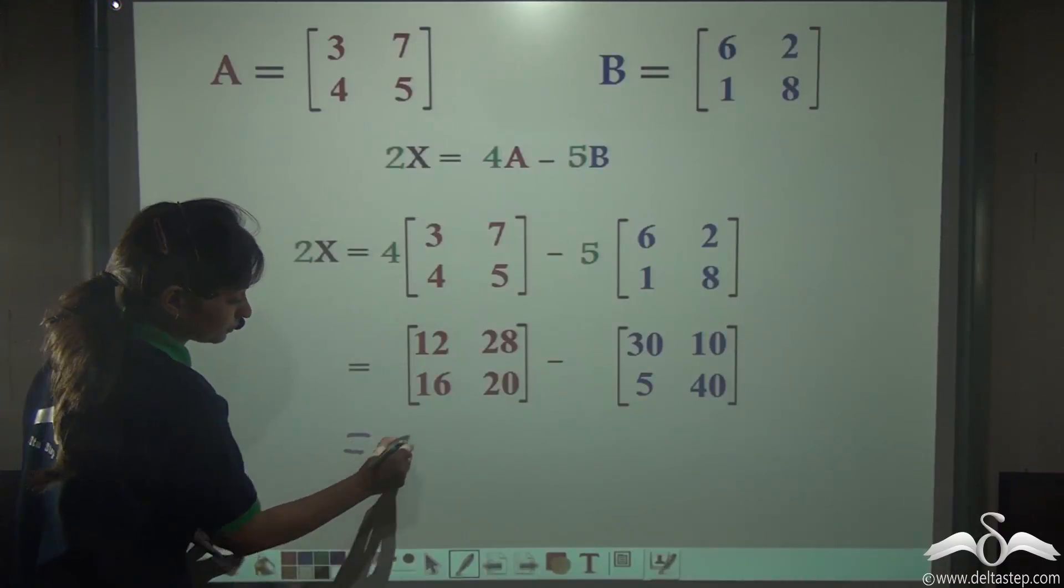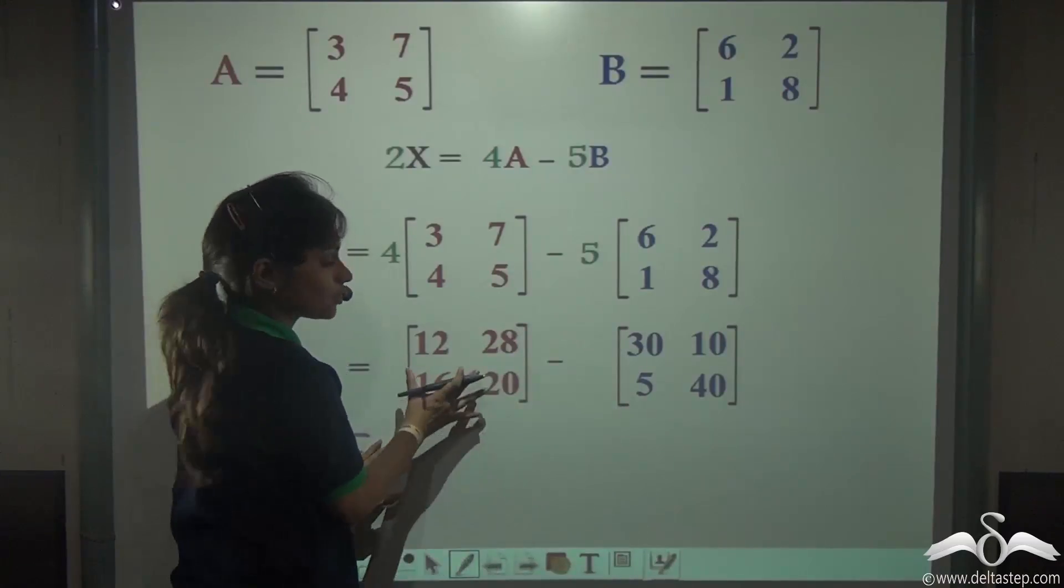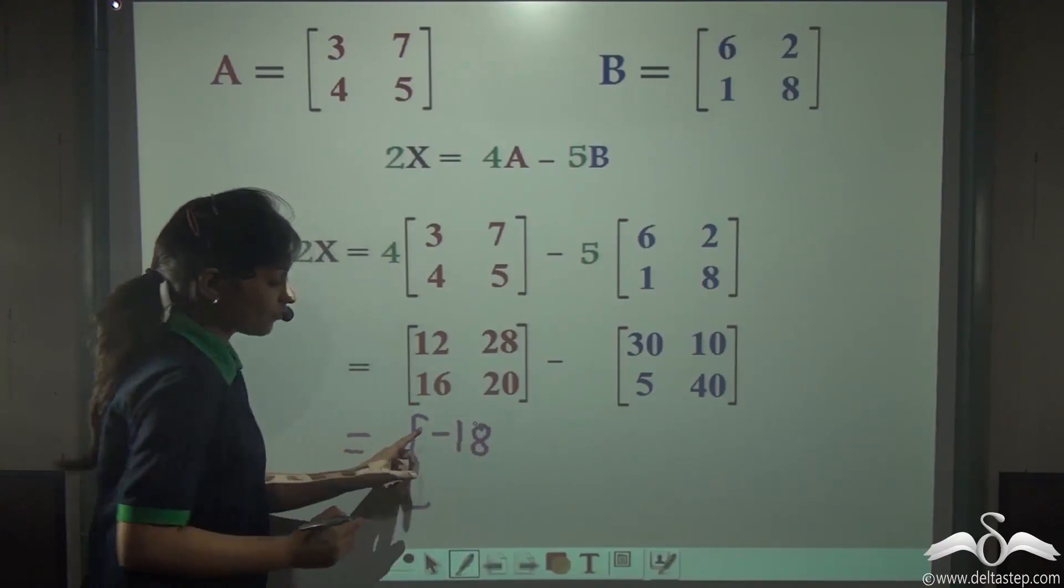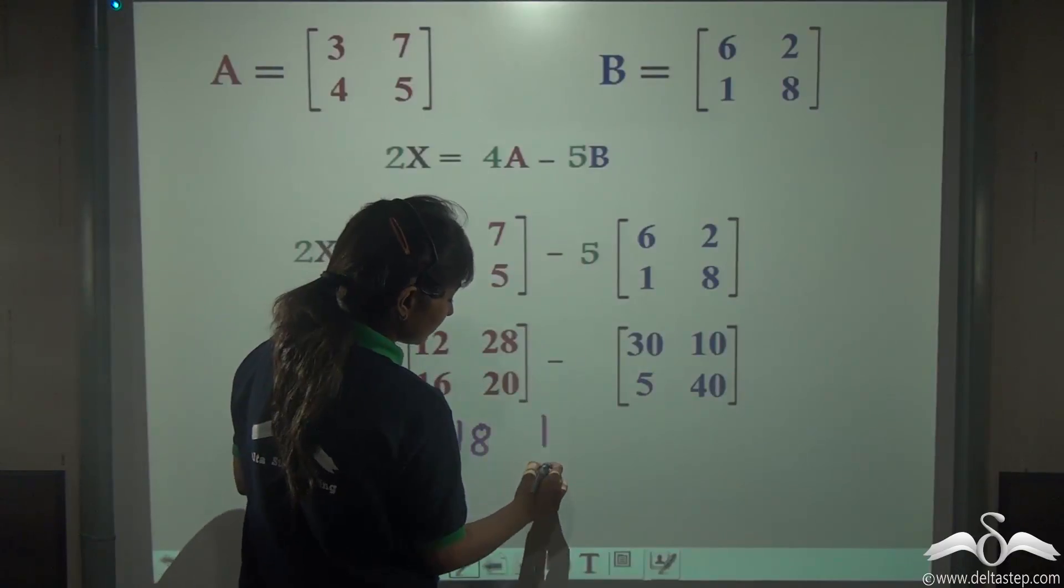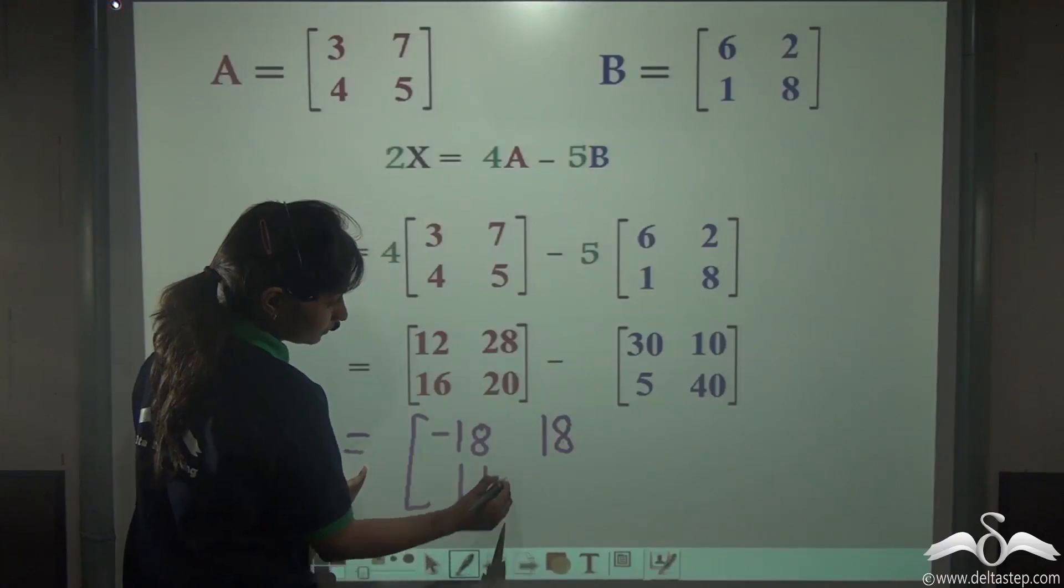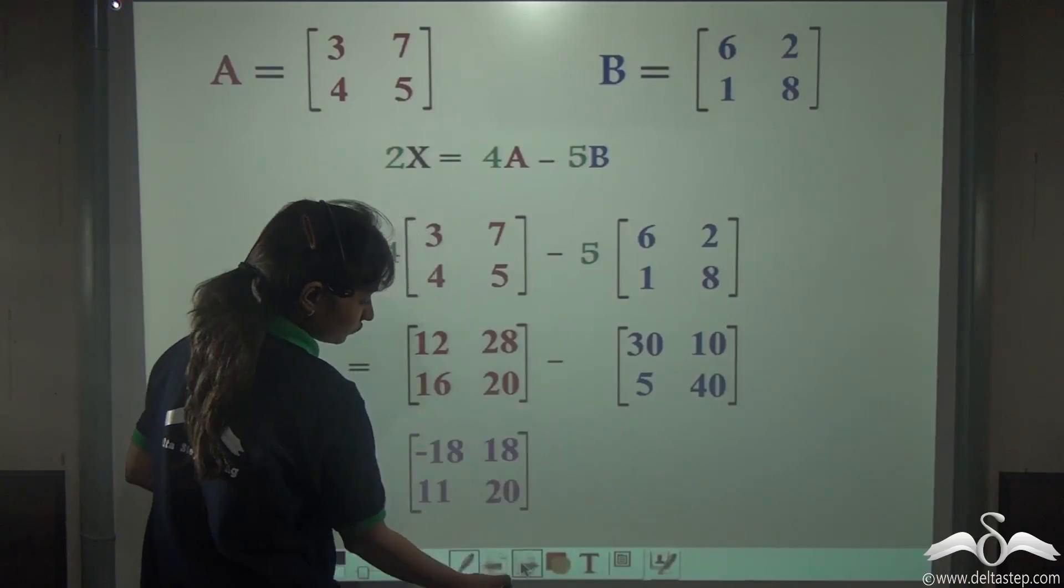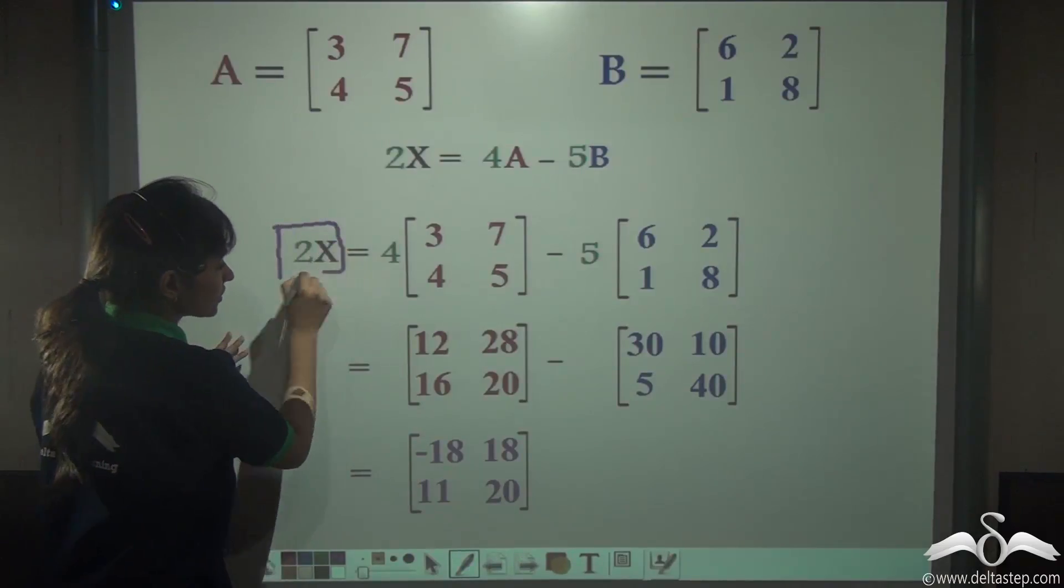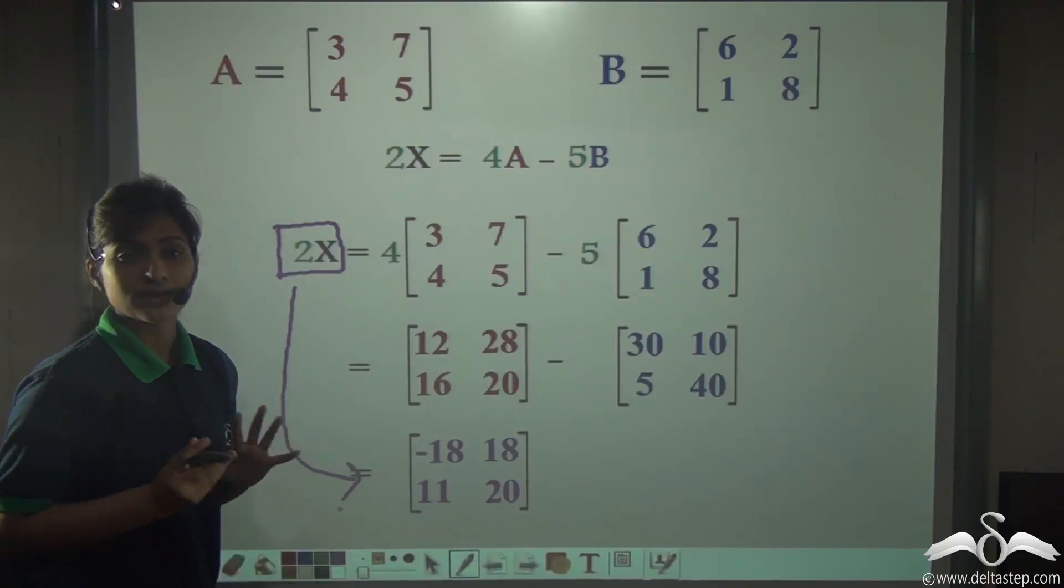12 minus 30 will give you minus 18. Do not forget to write the negative sign if your answer comes in negative. 28 minus 10 is 18. 16 minus 5 is 11. And 20 minus 40 is minus 20. You have not got the matrix X right now. You have got that 2X is equal to [-18, 18, 11, 20].